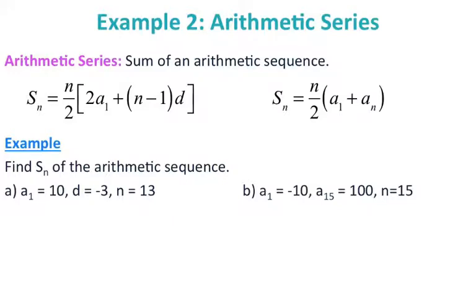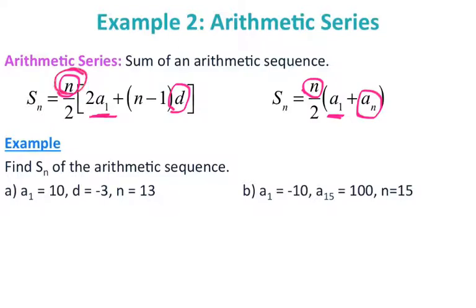Next we look at arithmetic series. A series is similar to the summation from 9.1 — it's taking all the terms of an arithmetic sequence and adding them together. There are two formulas. For both, you need N (the number of terms) and your first term. The first formula uses the common difference; the second formula uses the last term. Which formula you use depends on the information you have available.